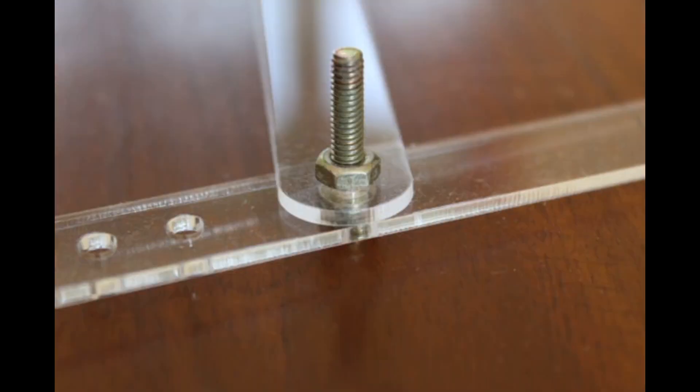To assemble the pivoting arms, simply pass an M4 bolt through the corresponding holes of the two arm pieces and fasten it with a nut.